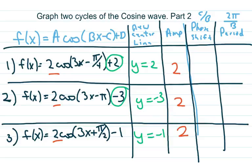The phase shift is c over b. Whatever this is, take the opposite. So this is going to be pi over 4 divided by 3, which is going to be pi over 12. The opposite of that is positive, so it's going to be positive pi over 3.